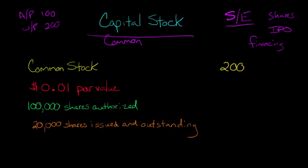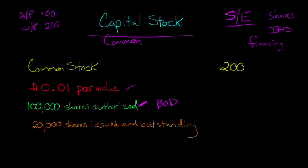This is the section where we're accounting for that. The firm has to disclose certain types of things, one of which is the par value, another of which is the number of shares that have been authorized. The firm has a board of directors, and the board of directors votes to decide how many shares they're going to authorize in this offering of stock to the public. In this case, it was 100,000 shares authorized.